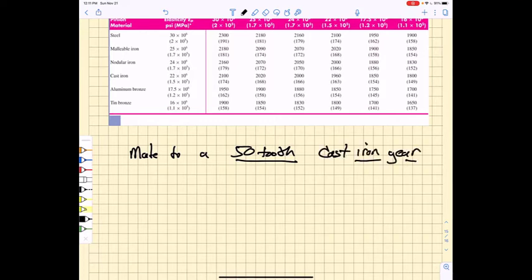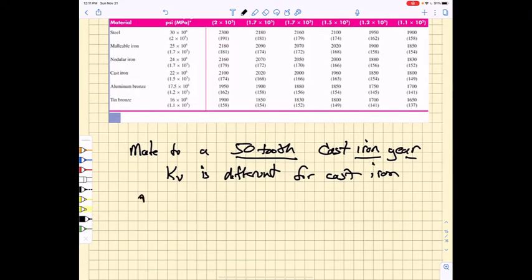Because the cast iron gear would be made differently than the steel gear, our velocity factor would be different for cast iron. But we can still calculate an elastic coefficient, CP, and then we can decide if we want to calculate a contact stress, sigma C.